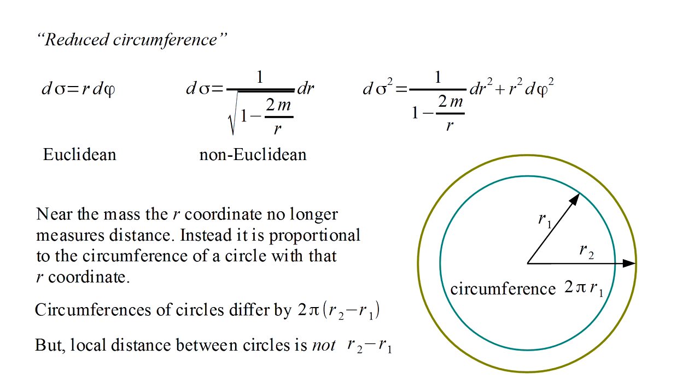The same will be true for a second circle with coordinate r2. The circumferences of the circles will differ by 2 pi times the difference of the r coordinates, as they do in Euclidean geometry. But the distance between the circles, as measured by a local observer, is no longer the difference of the r coordinates.